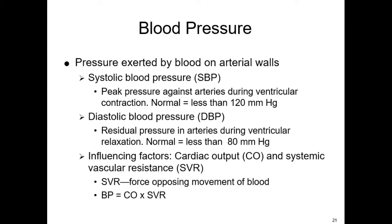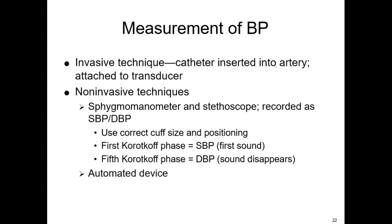Blood pressure is defined as the pressure exerted by the blood on the arterial walls. Normal systolic is less than 120, and normal diastolic is less than 80. Factors affecting blood pressure include cardiac output and systemic vascular resistance. We can measure blood pressure invasively using arterial lines attached to a transducer, or non-invasively using a sphygmomanometer and stethoscope. To get the right blood pressure reading, you must use the correct cuff size and correct patient positioning.